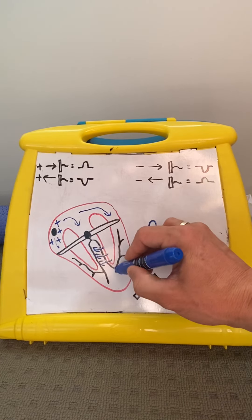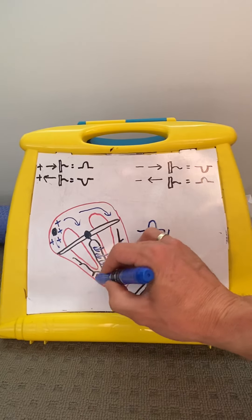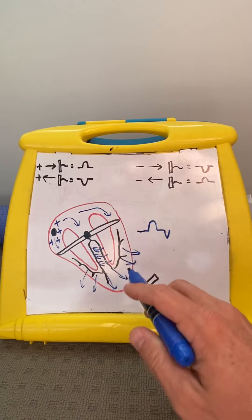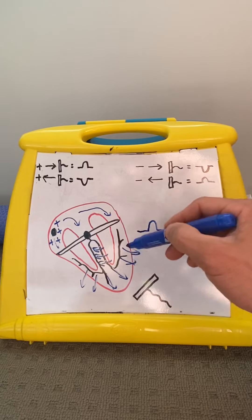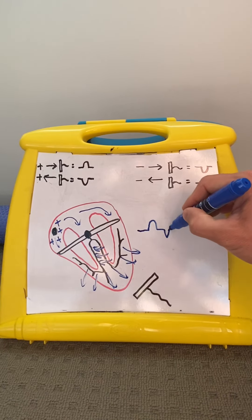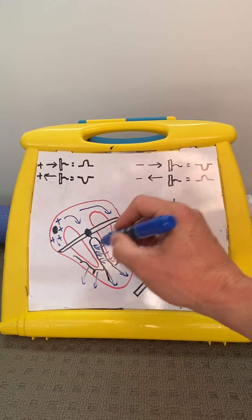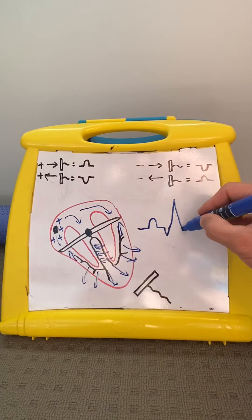Then what happens is it hits these Purkinje fibers, and it moves in this particular direction. Now you're saying, well that's away and towards. Now the left ventricle is more than twice as thick as the right, so it's overwhelming. So the direction of the lead, and you get a big bump up. Then when you hit the top, it's going away from the lead, so you get a dip down.